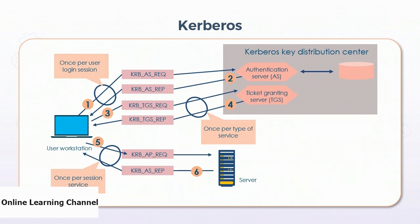In step four, the TGS decrypts the ticket and authenticator, verifies the request, and generates a ticket for the requested service (e.g., SharePoint). The ticket contains the client name, optionally the client's IP address, a realm name, and a lifespan. The returned message contains two copies of a server session key — one encrypted with the client password and one encrypted with the service password. In step five, the client sends a request to SharePoint with the ticket and an authenticator; SharePoint decrypts the session key, verifies the match, and grants access. In step six, if mutual authentication is required, the server replies with a server authentication message.